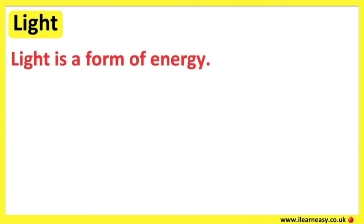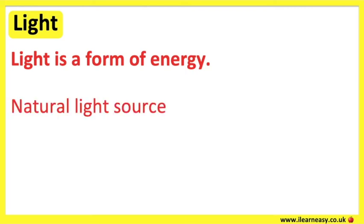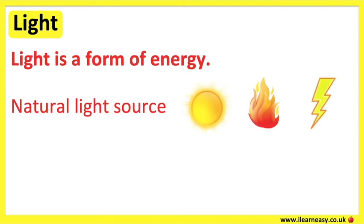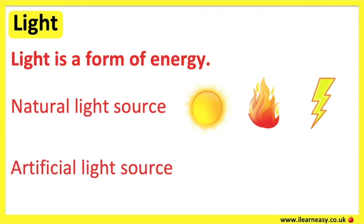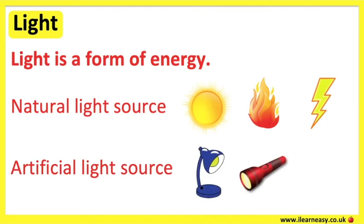Light is a form of energy. Darkness is when there is little or no light. A light source is something that makes light. Light sources can be natural or artificial. Natural light sources exist by nature. Artificial light sources require a supply of energy, usually from mains electricity, batteries, or chemical reactions. Examples of artificial light sources are a lamp, a torch, and matches.